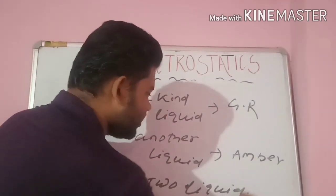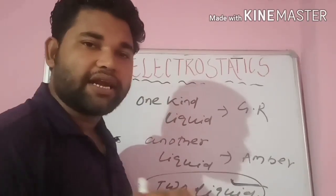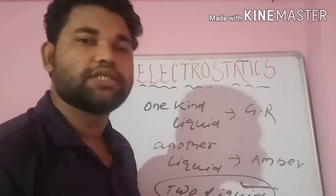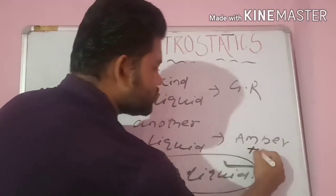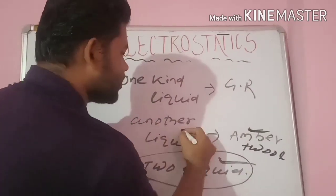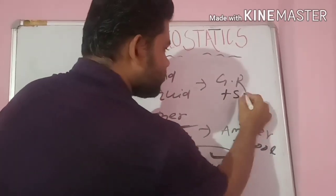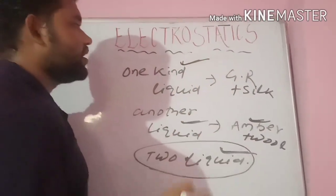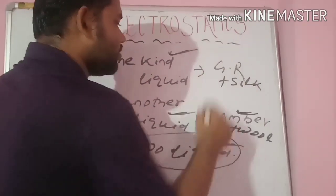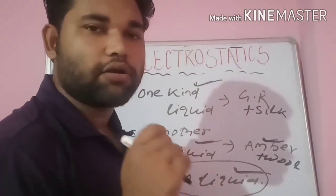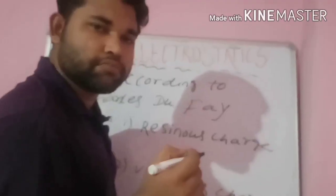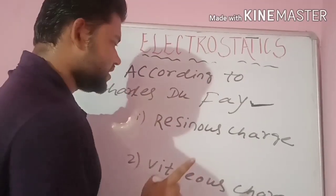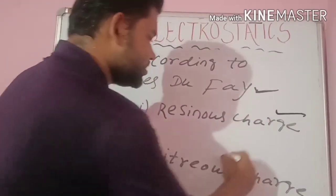Initially, there are two types of charge that are developed: when amber was rubbed with wool, and when glass rod was rubbed with silk. According to charge, there are two types of charge — one is Resinous charge and another is Vitreous charge. Resinous means the charge developed on amber rubbed with wool. Vitreous is a Greek word meaning glass — the charge developed on glass rod rubbed with silk.